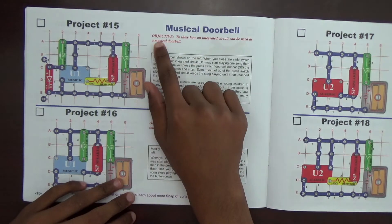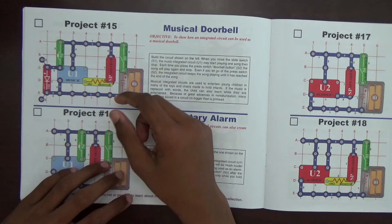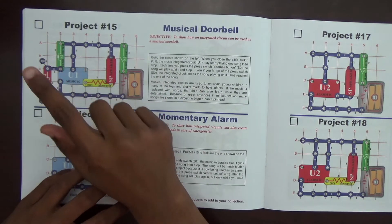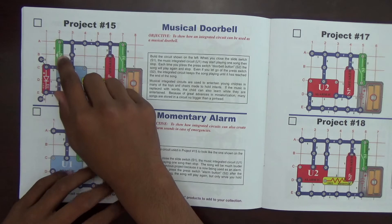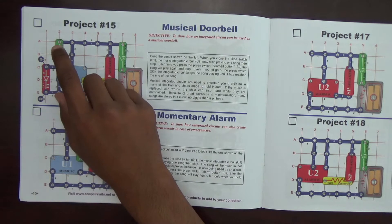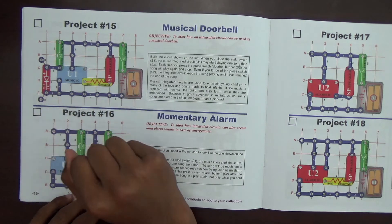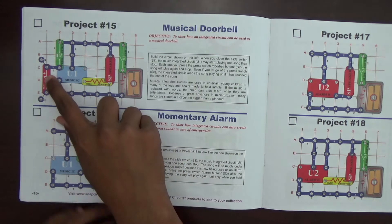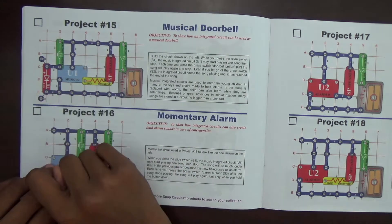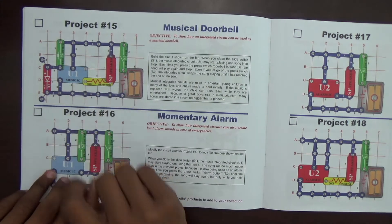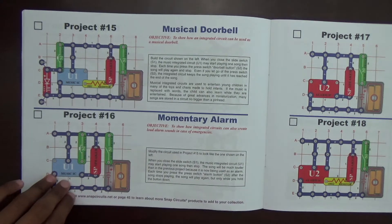This project is called a musical doorbell and as its name suggests, a doorbell but with music. The doorbell is supposed to be the S2 switch and the light is supposed to represent the light when you press the doorbell. And then the music comes from the music IC and the speaker. So let's get started.